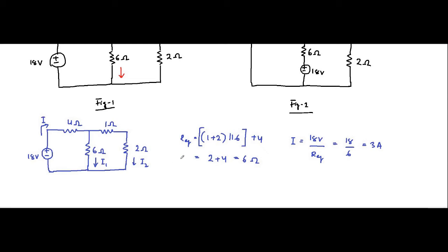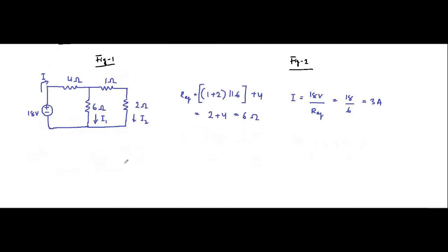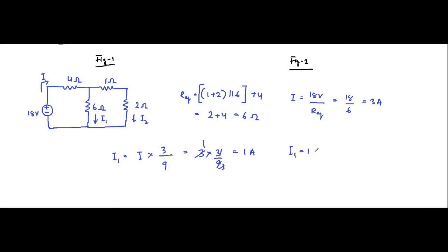In order to determine I1, we apply the current division rule. I1 is equal to I multiplied by 3 by 9, as per the current division rule, which gives 1 ampere. So I1 is equal to 1 ampere.